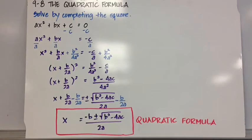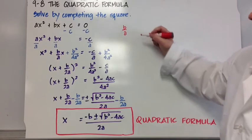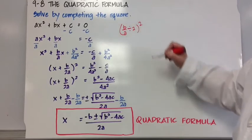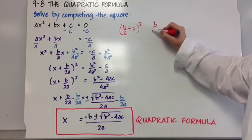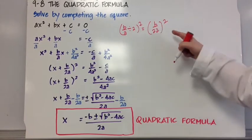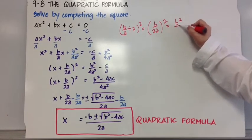And of course our b term is b over a, and I want to divide that by 2, and then I want to square it. Well that's the same as b over 2a squared, which results in b squared over 4a squared.